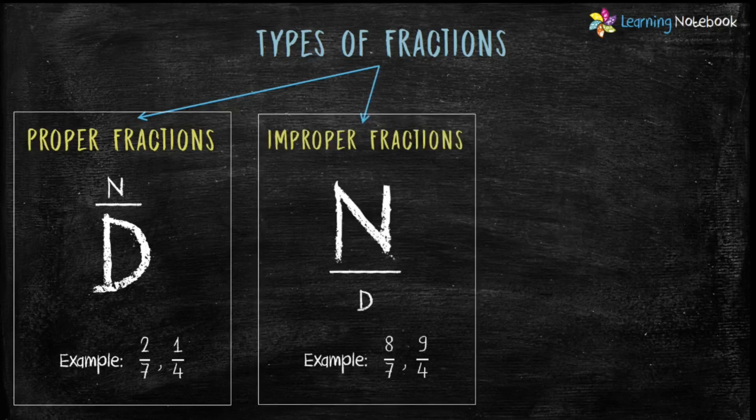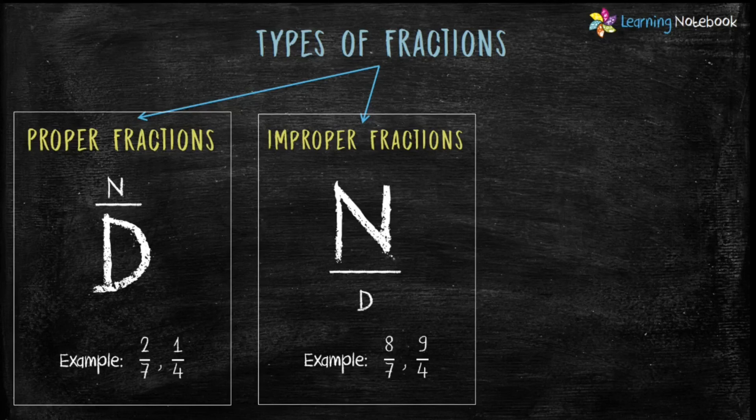Next we learned improper fractions, where numerator is greater than denominator. For example, fractions like 8 by 7 and 9 by 4.